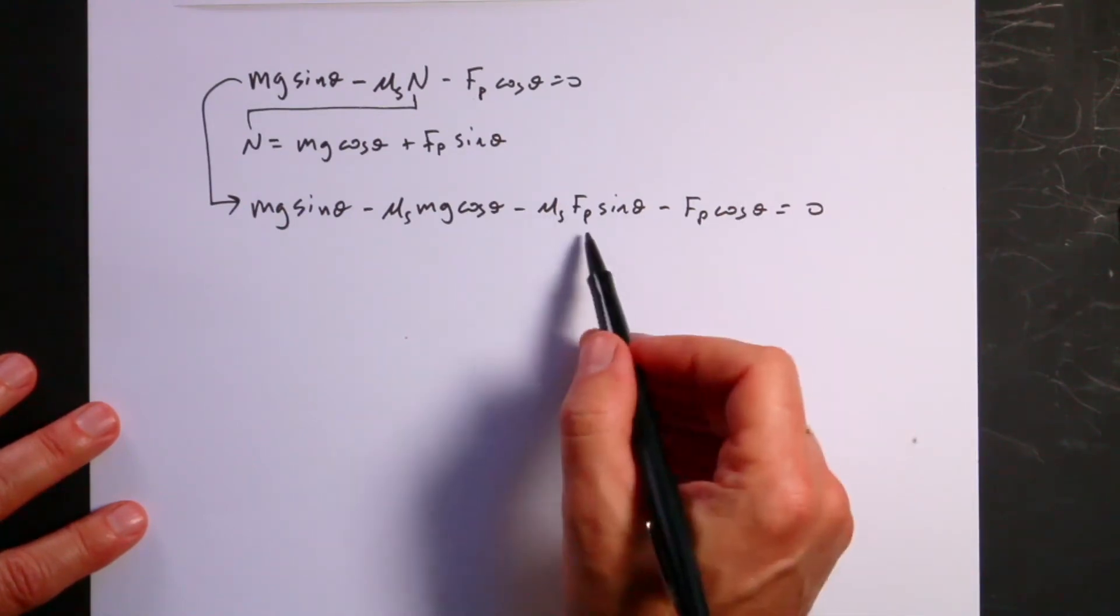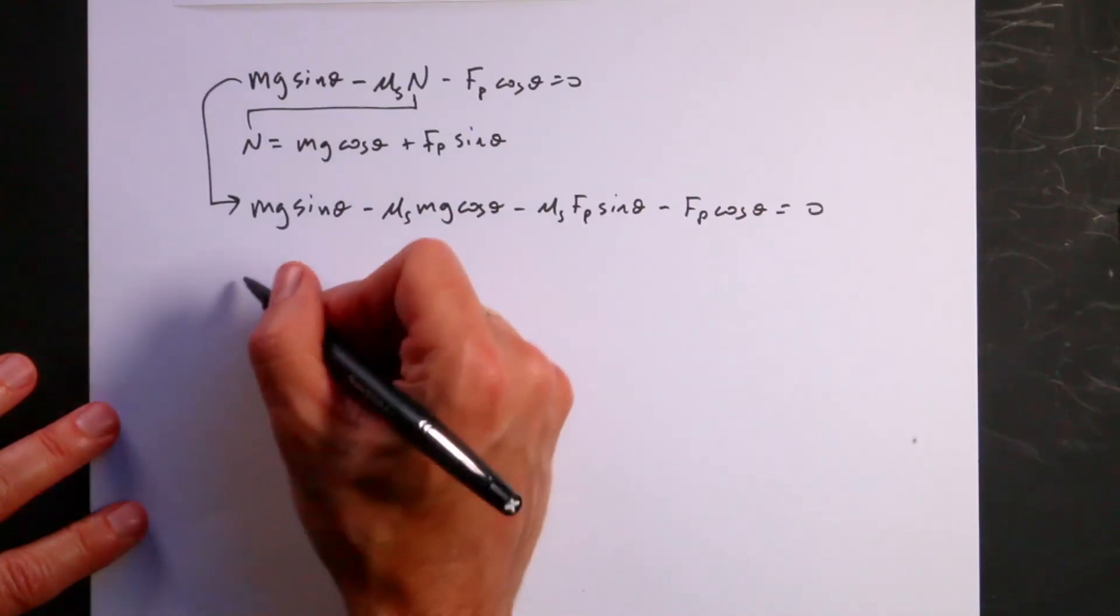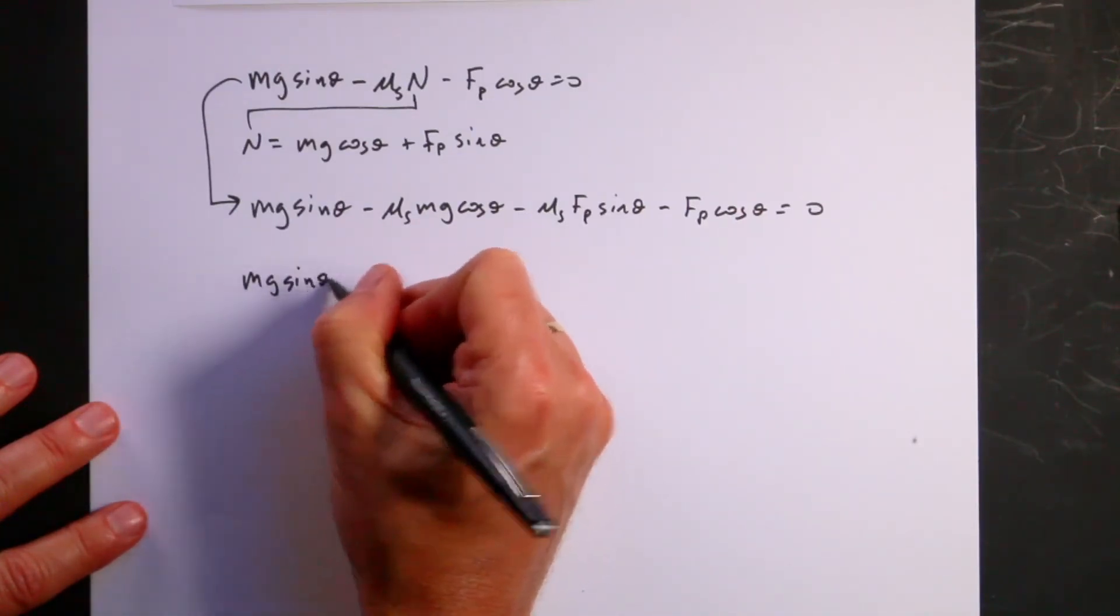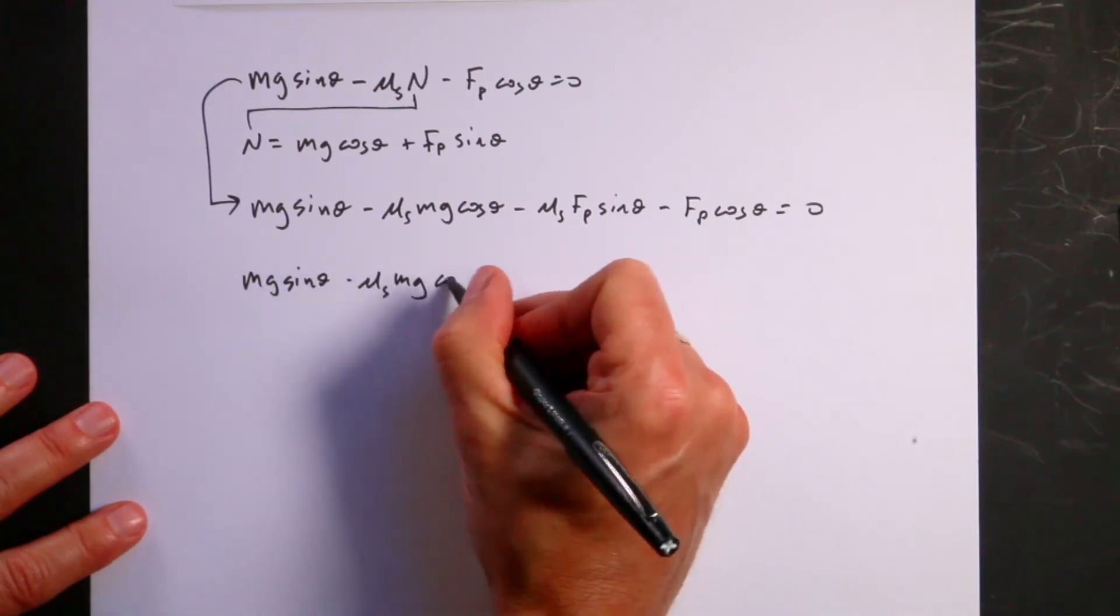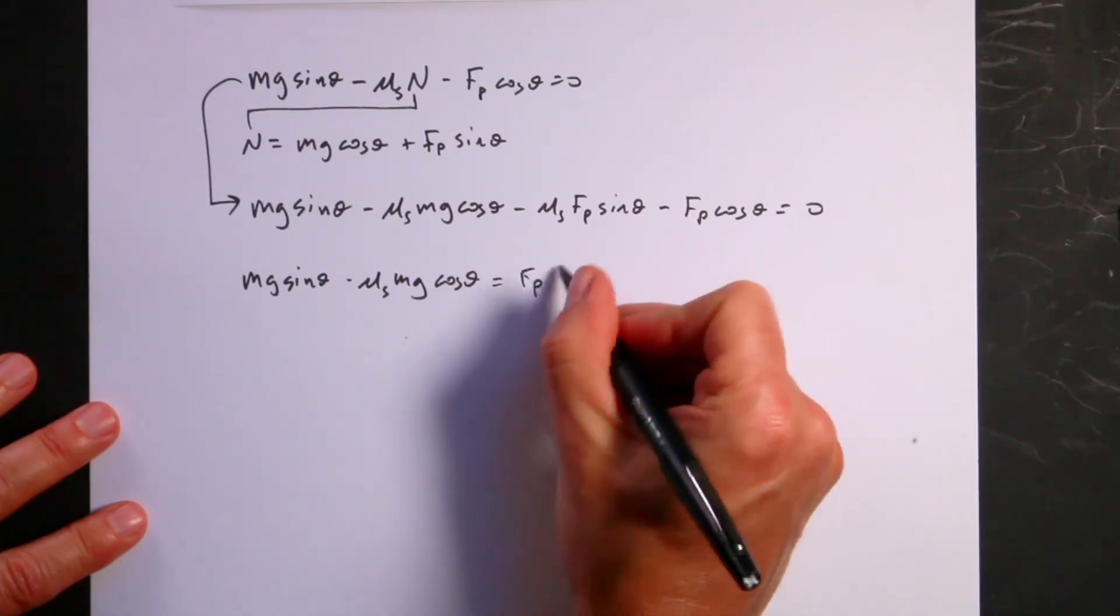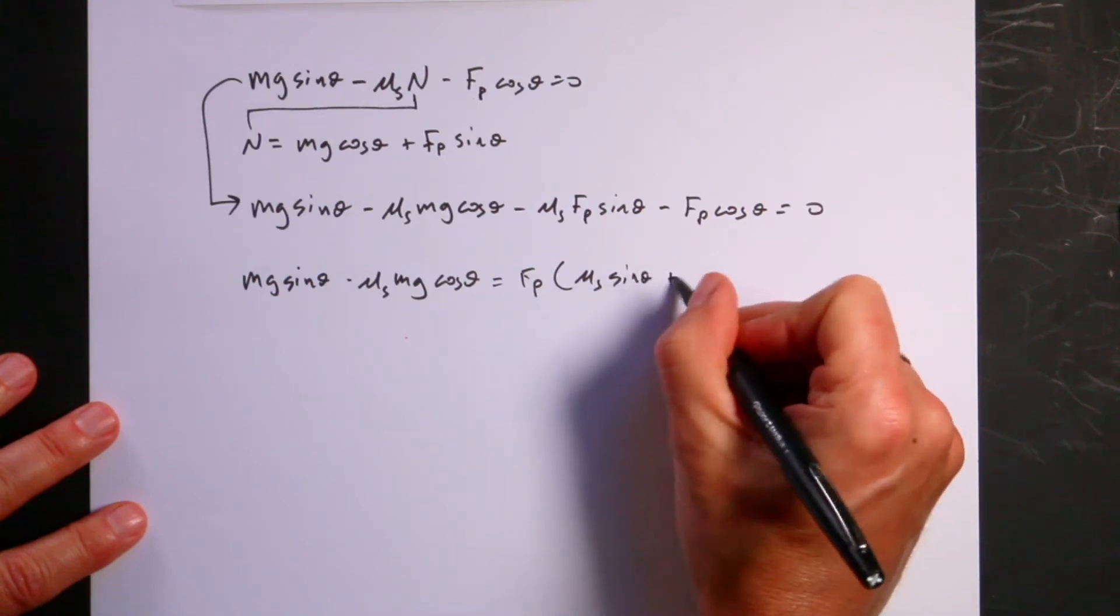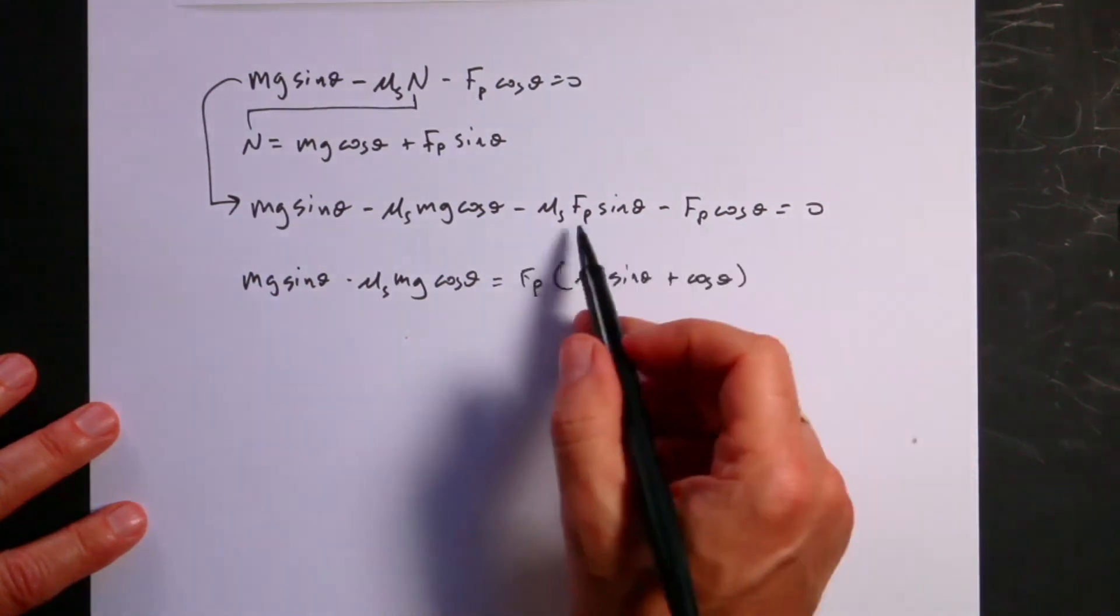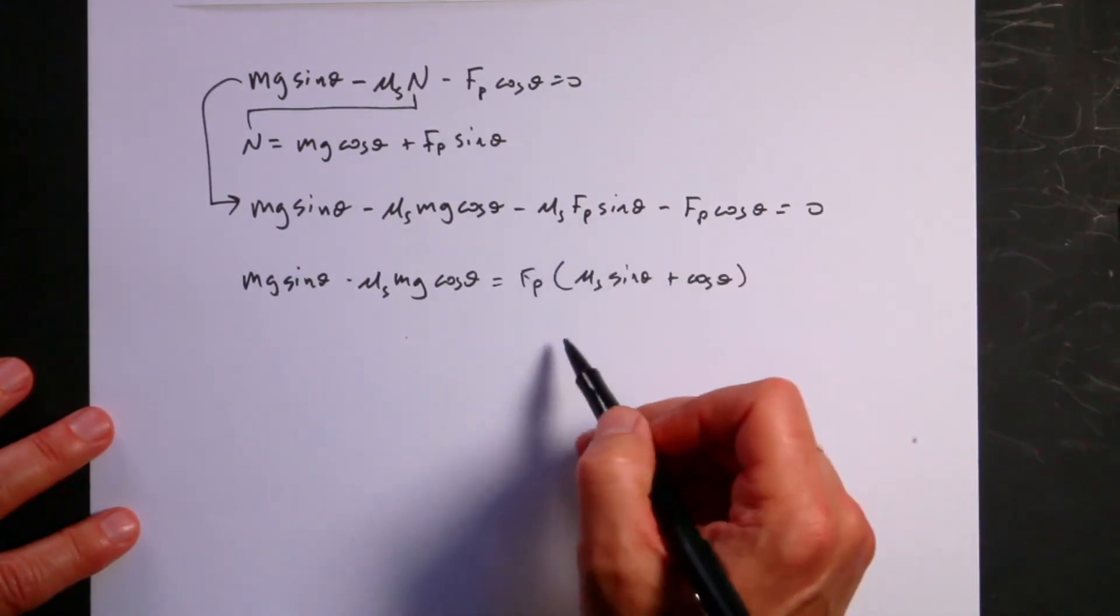So let's add these two terms to the other side and factor out the Fp, because those are the only Fp terms. So I have mg sine theta minus mu s mg cosine theta equals Fp times mu s sine theta plus cosine theta, right? Because when I add these to both sides, they're going to be positive, and then I'm going to factor out the Fp, and I get that term right there.